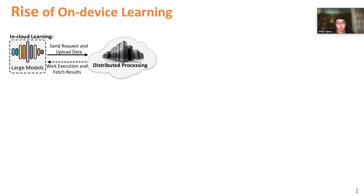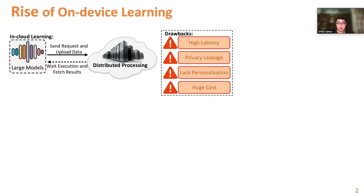The magic of machine learning comes from model training on large-scale datasets, with development in the cloud environment to meet the resource-hungry demands. However, this kind of in-cloud computing paradigm is hard to provide personalized models and suffers from high latency and privacy leakage.